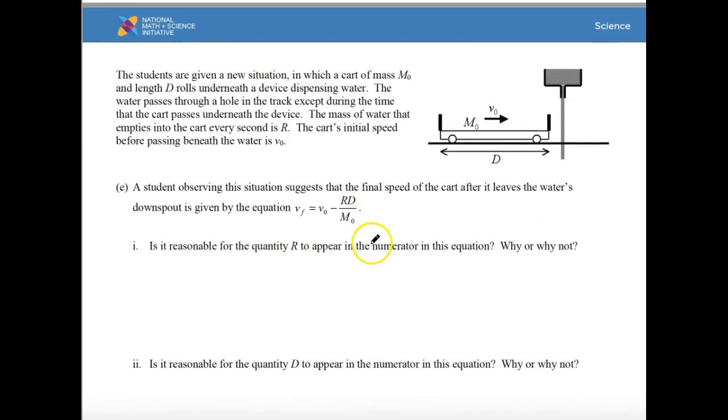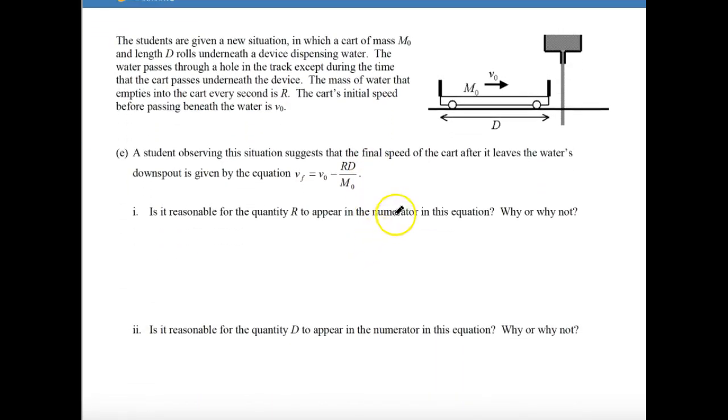On the next page, it says now the system, students are getting a new situation. You have a cart of mass M0, length of D that is the length of this thing, and it goes under a device that is dispensing water. And as it does that, the water is trapped in here, so none of it spills out. So the mass of the water that empties into the cart every second is R. So this right here is how much water is going into it every second. So it's just a rate. They want to know, is it, if you have this equation, notice that the final velocity is equal to the original velocity minus the rate of the water times the distance divided by the original mass of that cart.